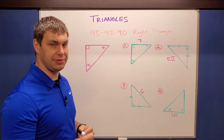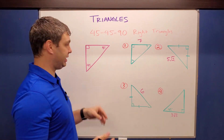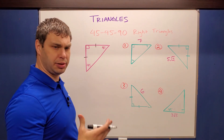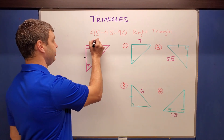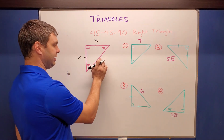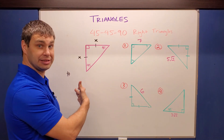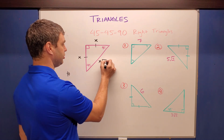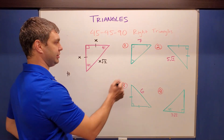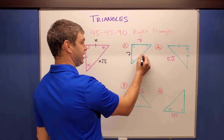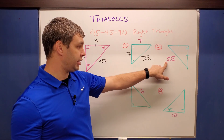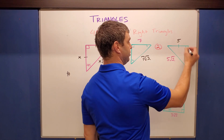Starting off with 45-45-90 right triangles — I like to think of it as a template. Both legs are congruent, so we call each leg X. The hypotenuse is X times the square root of two. For example, in number one, one leg is 7, so the other leg is also 7, and the hypotenuse is 7√2. In number two, the hypotenuse is 5√2, so the number in front of the square root of two is 5, meaning both legs are 5.